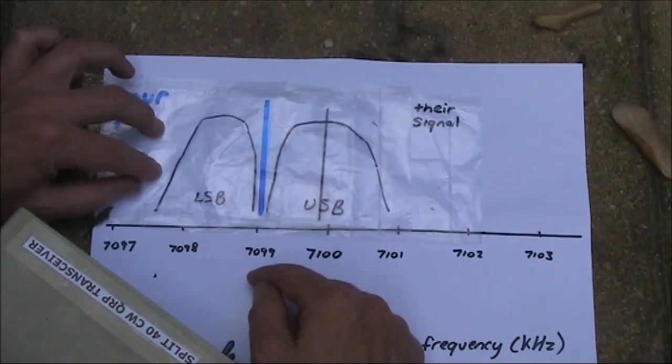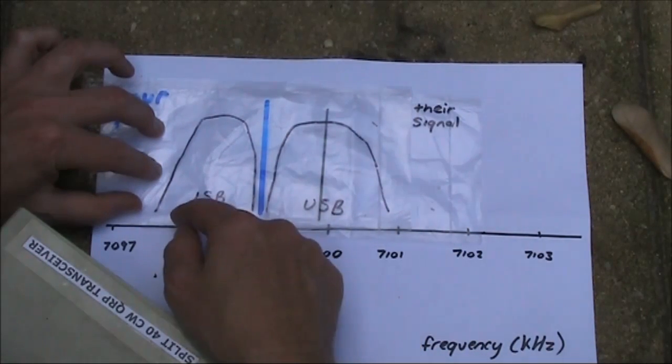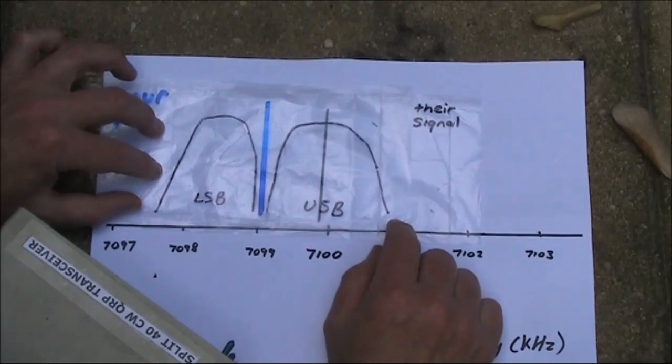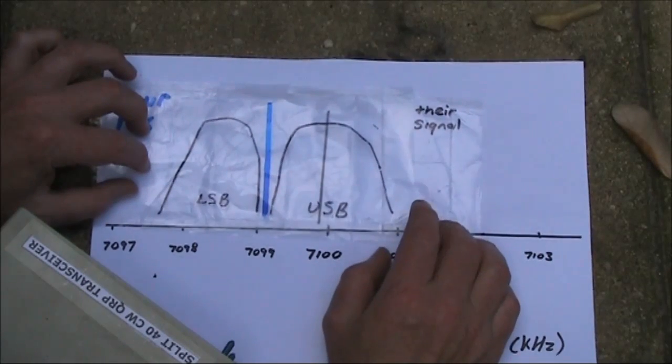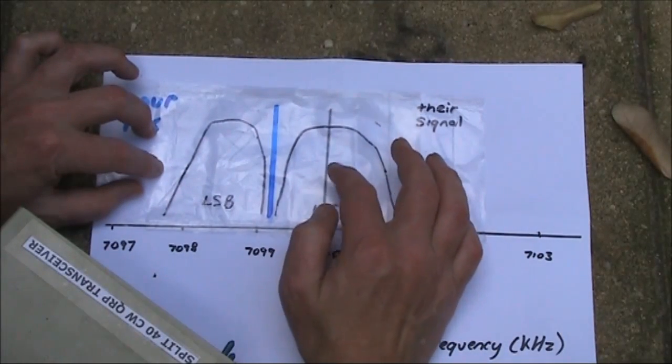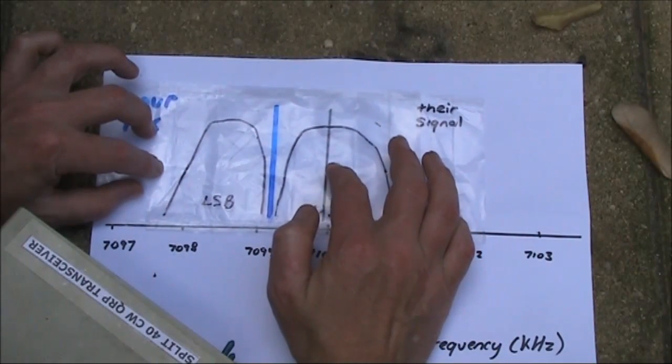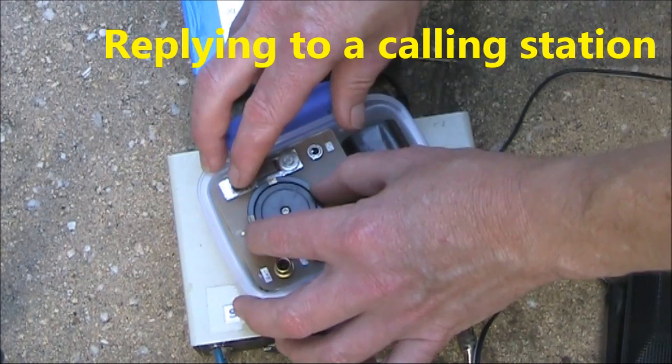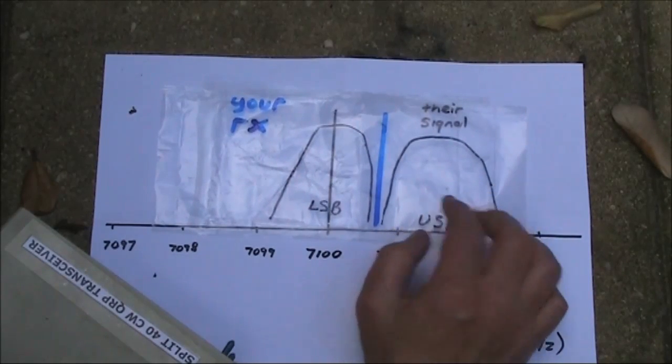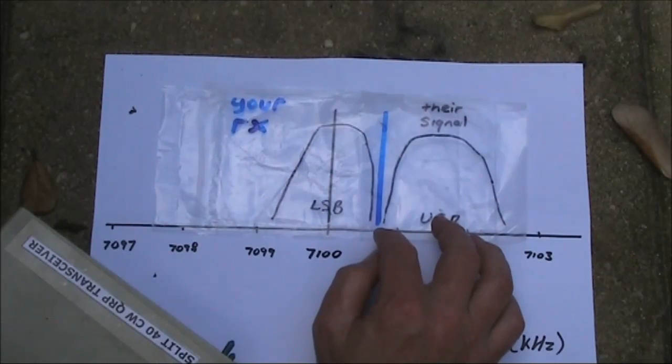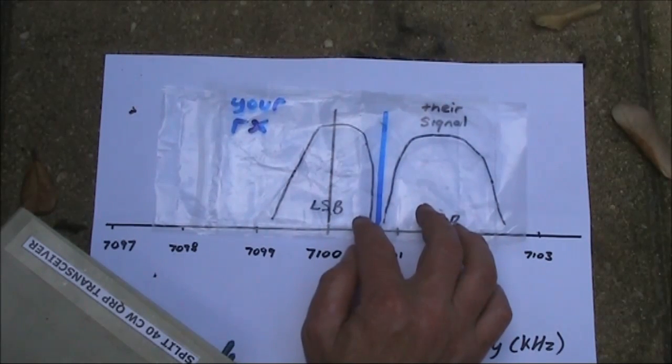Of course that's only good if the band is uncrowded. If there's another signal that comes up on 7098, then you've got the problem all over again and can't escape it. Anyway, that's the limitations of direct conversion receivers, but provided that the band is not too busy and the desired signal you're trying to receive is fairly strong, then you should be okay. So we've set up so that you're receiving the station on 7100. Your local oscillator is close to 7101, producing a comfortable beat note of around 1000 Hz in the headphone.